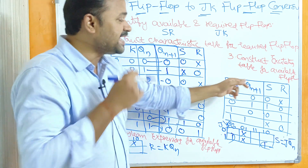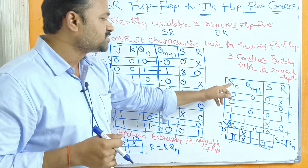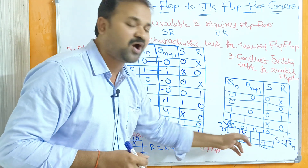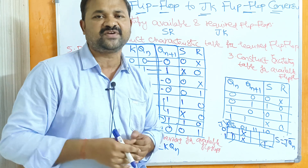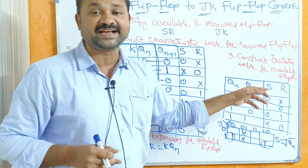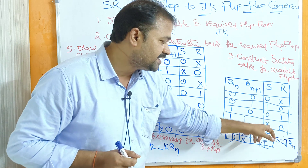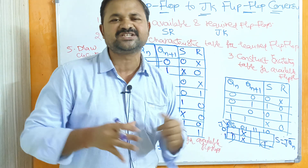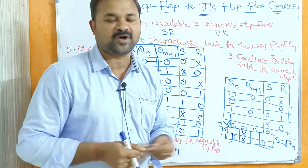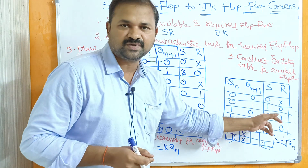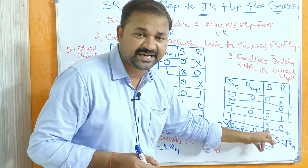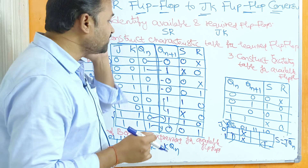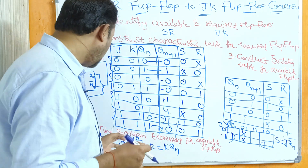Step three is to construct the excitation table for the available flip-flop, which is the SR flip-flop. Here QN and QN+1 are the inputs, while S and R are the outputs. With two inputs we have four combinations: 00, 01, 10, 11. For the S column the values are: 0, 1, 0, don't care. For the R column: don't care, 0, 1, 0. The S column ends with don't care, and the R column starts with don't care.